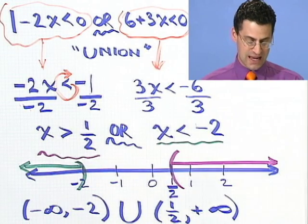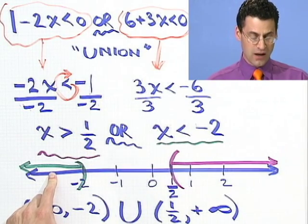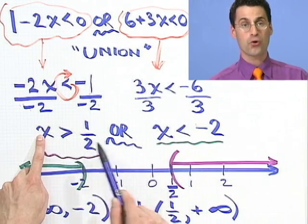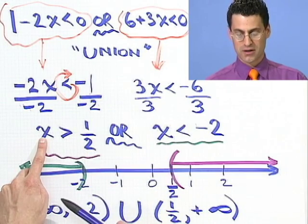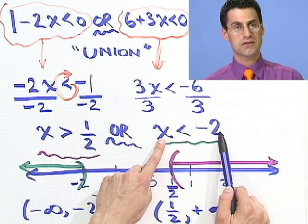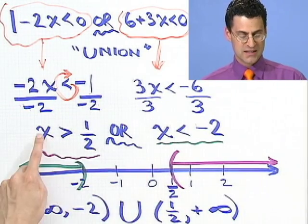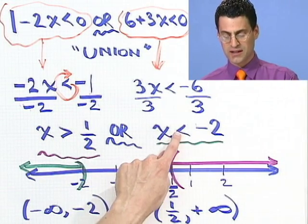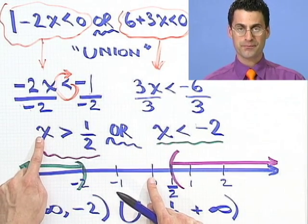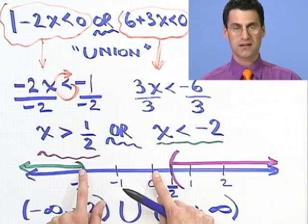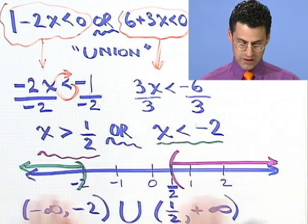Any of those things will be a solution. For example, if you pick something like negative 3, is negative 3 in here? Well, let's see. I'm asking, is negative 3 greater than a half or is negative 3 less than minus 2? Well, negative 3 is not greater than a half. That's wrong. But notice that negative 3 is less than negative 2. So, in fact, this whole thing is okay because at least one of them is satisfied. What about 0, though? Is 0 bigger than a half or is 0 less than negative 2? Well, it turns out the answer is no. 0 is not bigger than a half. And 0 is not less than negative 2. So 0 is not a solution to this because it doesn't satisfy either one of them. So or you put everything together.